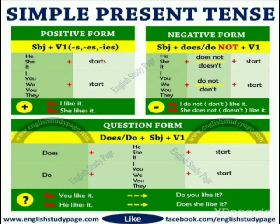He, she, it ke saath s laga hua nazar aa raha hai. He/she/it starts. So if you are going to convert it into negative: he doesn't start, she doesn't start.